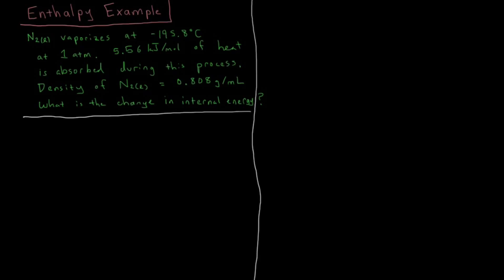Let's try to solve this example problem for calculating the enthalpy during the vaporization of liquid nitrogen. Liquid nitrogen is going to vaporize at negative 195.8 Celsius at one atmosphere of pressure. So our question is, what is the change in internal energy during this process?